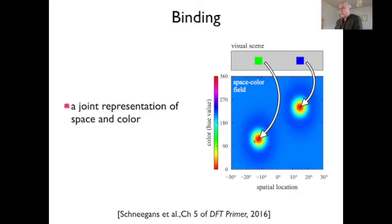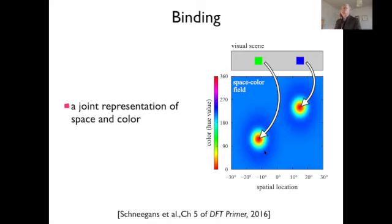The two feature dimensions of the objects — color and location — are represented together. The neurons or activation variables in this field represent every possible combination: every color combined with every spatial value. If you activate a subpopulation, you know the combination of the two feature dimensions, and in that sense the two values are bound to each other.